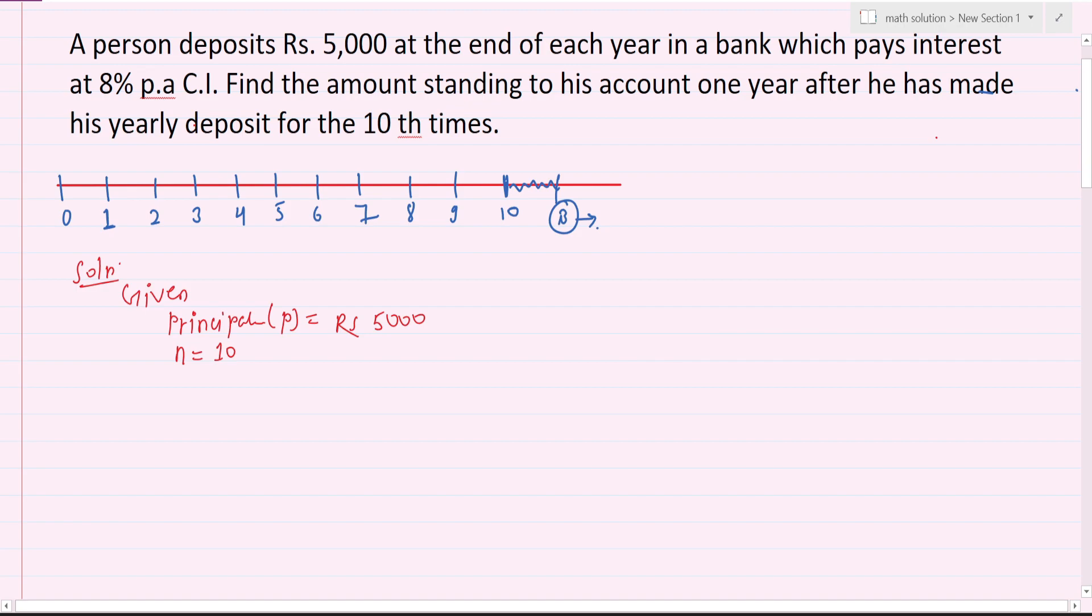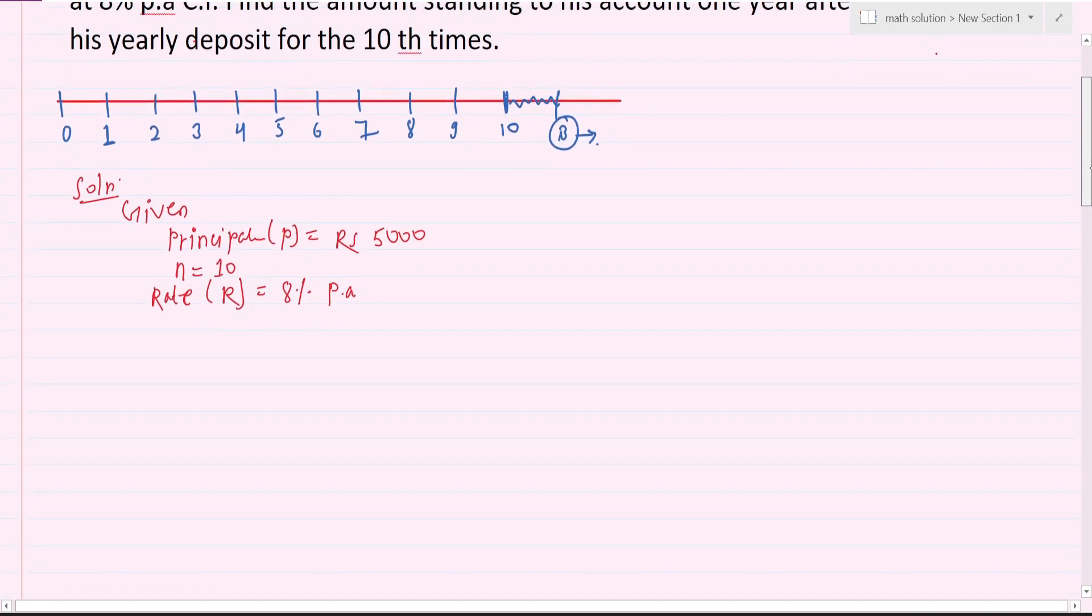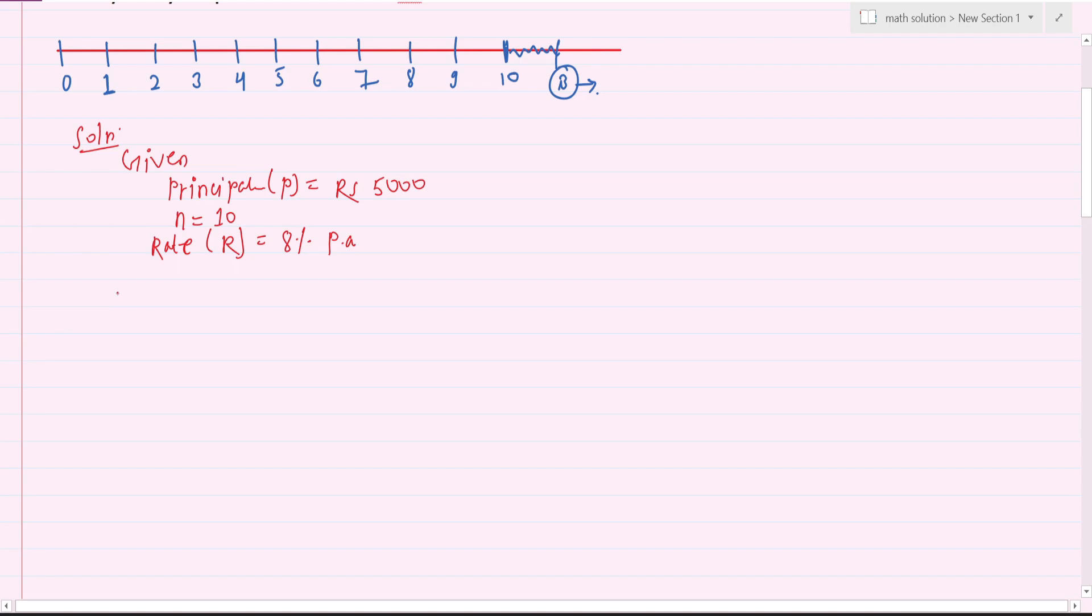The rate is 8 percent. So for the answer I need, i equals to the formula r upon 100 into m. r is 8, m is yearly so it's 1.